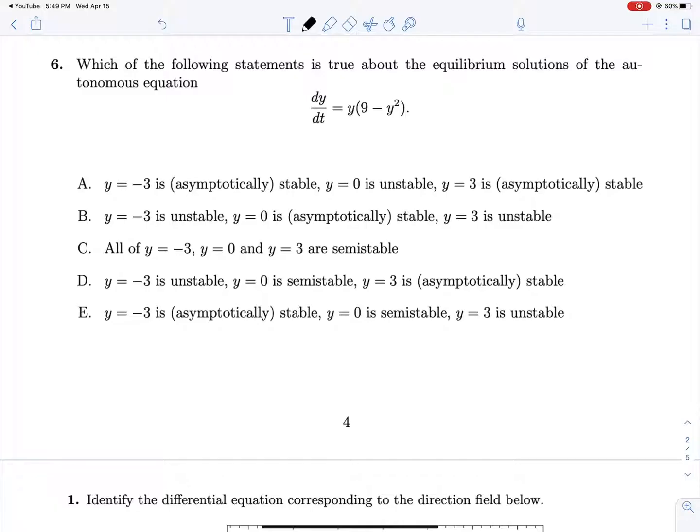Six, which of the following statements is true about the equilibrium solutions of this autonomous equation? So we're kind of checking the behavior of our system around what looks like three important values. So let's draw a number line here. We see that dy/dt equals 0 at y equals 0, y equals 3, and y equals negative 3.